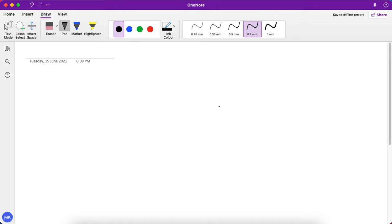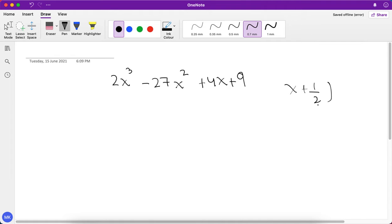If we have 2x³ - 27x² + 4x + 9 and we have x + 1/2 as a factor, we know that x should be equal to -1/2. So now we write the -1/2 outside: 2, -27, 4, and 9. These are the coefficients.